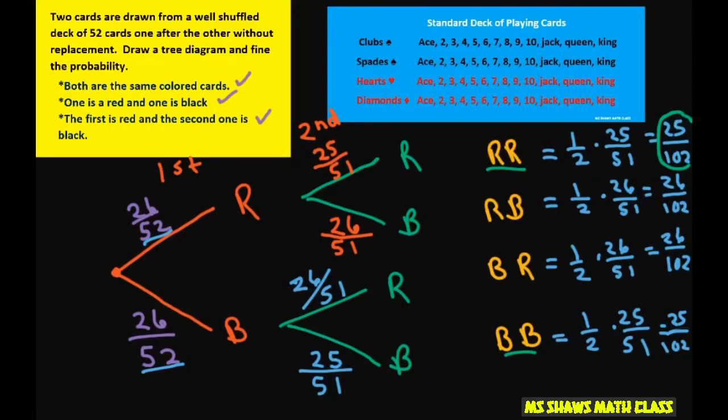So add those up, and you're going to get 50 out of 102, which equals 25 divided by 51. If you reduce it. So for this one, it's going to be 25 divided by 51.